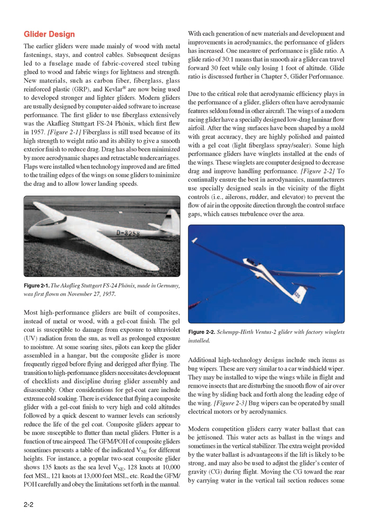Additional high-technology designs include such items as bug wipers. These are very similar to a car windshield wiper. They may be installed to wipe the wings while in flight and remove insects that are disturbing the smooth flow of air over the wing by sliding back and forth along the leading edge of the wing. Bug wipers can be operated by small electrical motors or by aerodynamics. Modern competition gliders carry water ballast that can be jettisoned. This water acts as ballast in the wings and sometimes in the vertical stabilizer.